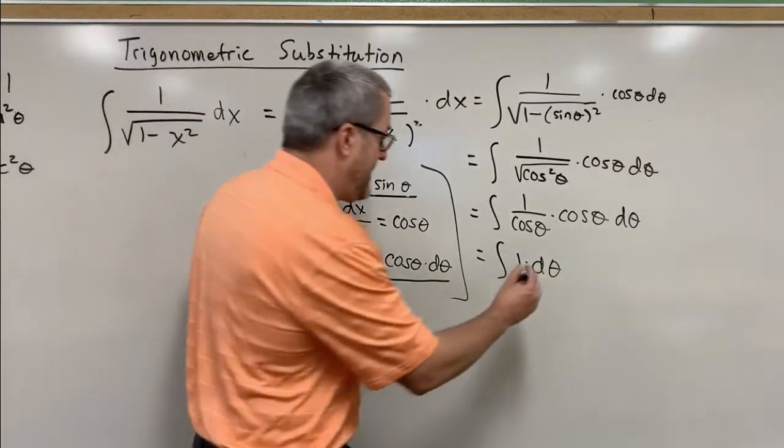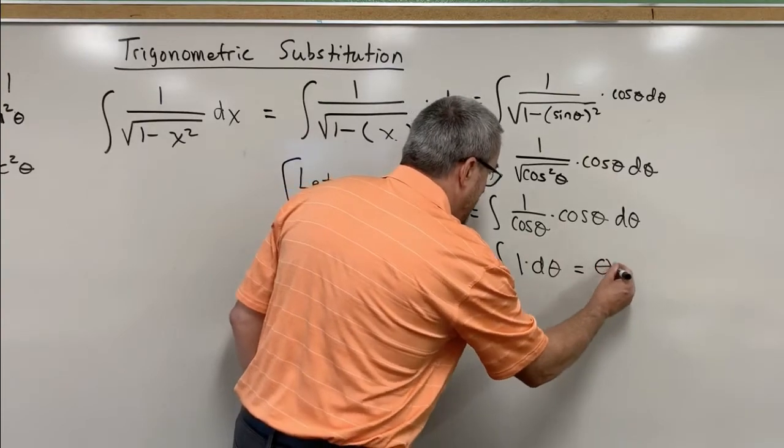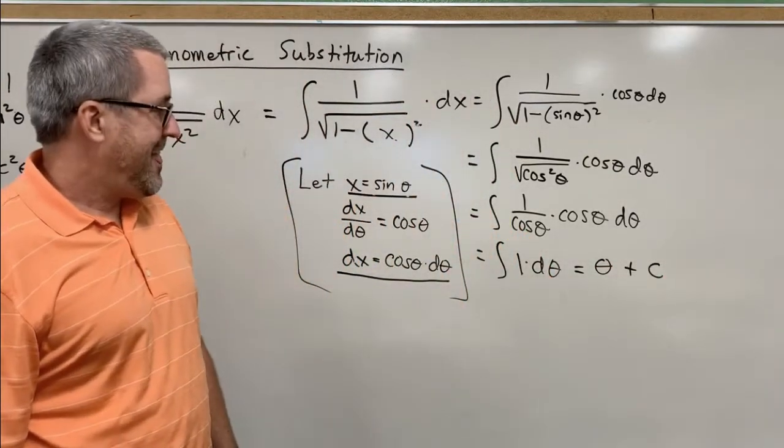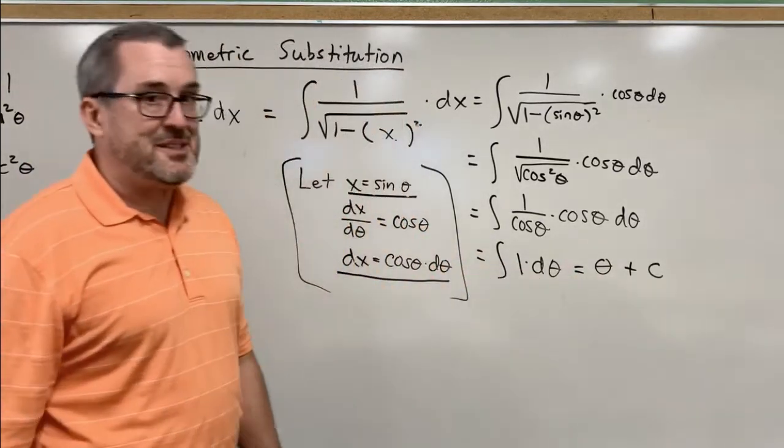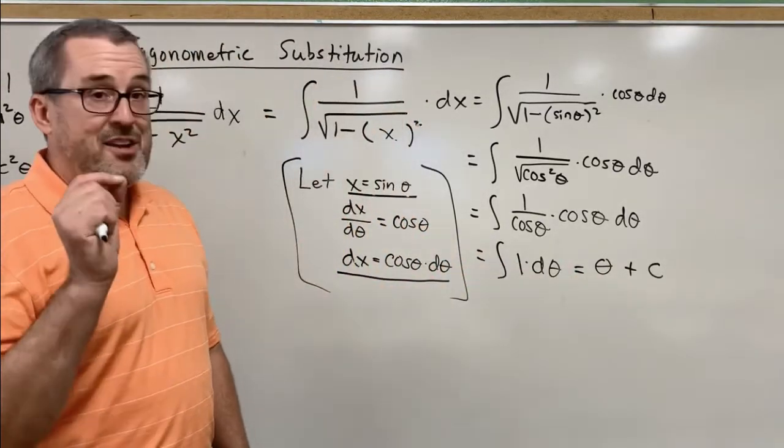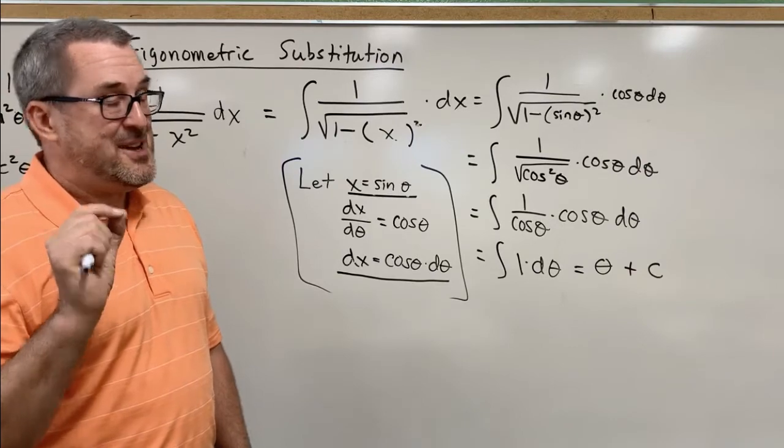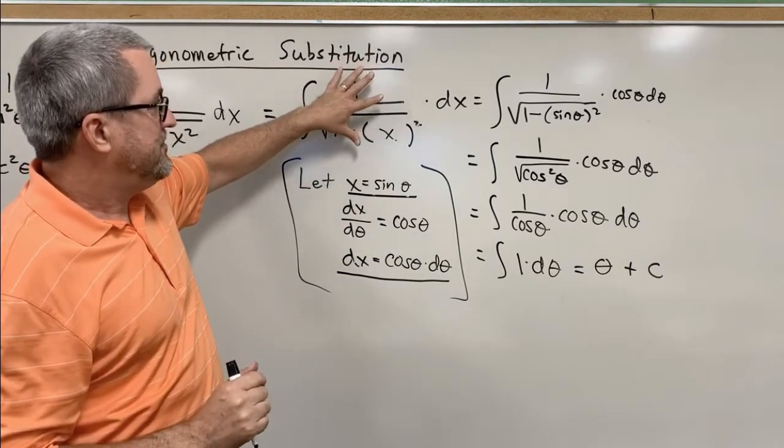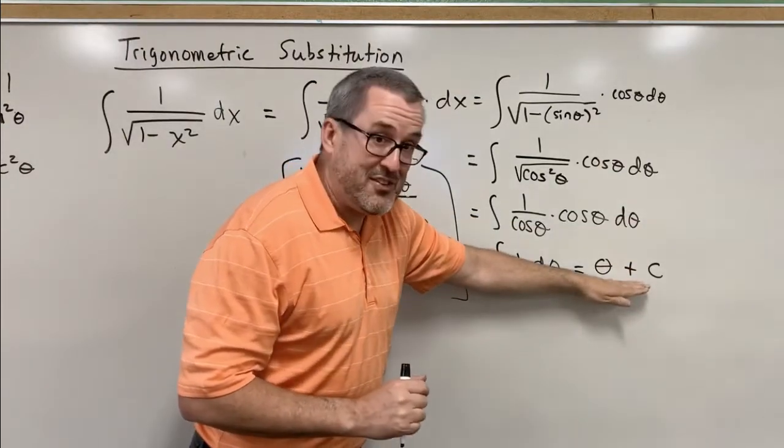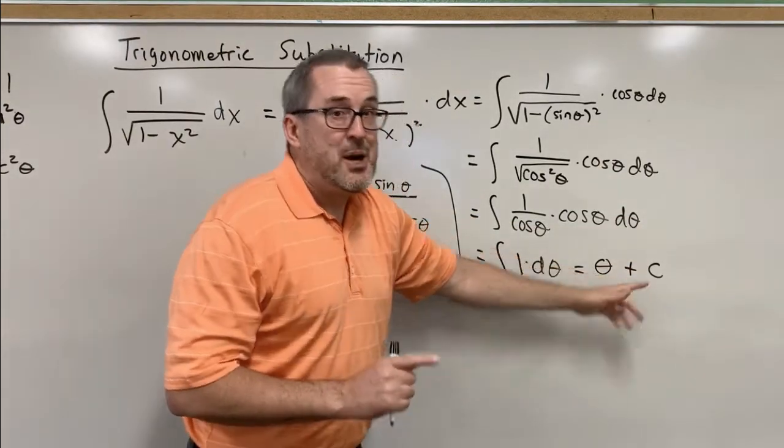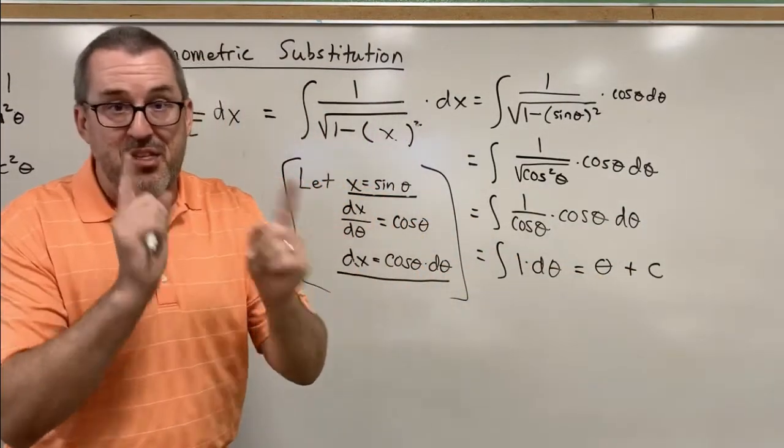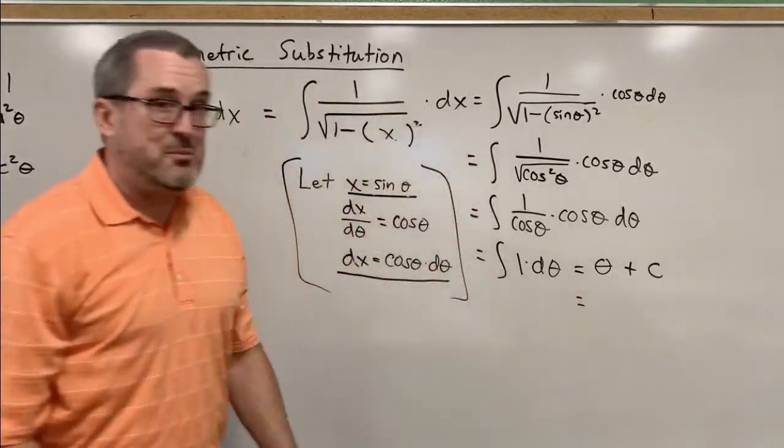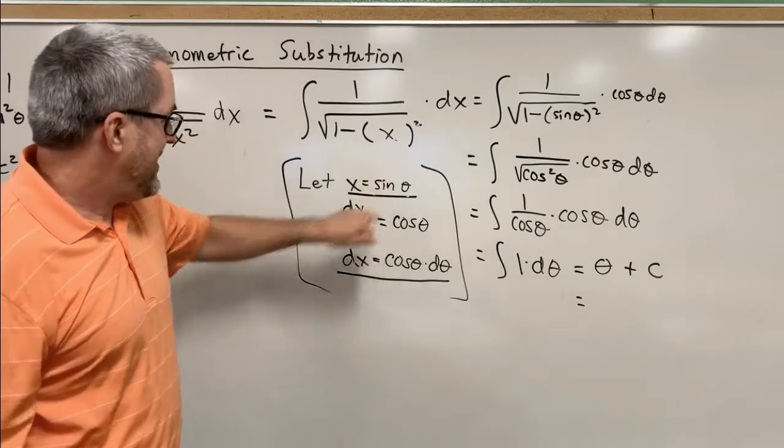Now the integral of one dθ is just theta. Don't forget your integration constant plus c. So our result is just theta plus c. Now we are going to do one last move, because our original problem was involving x. We now have an answer for this integral involving theta. But what's the relationship between theta and x? Could we have a final answer that's in terms of x? Yes. Come back over here.